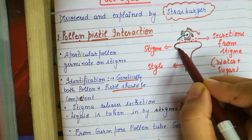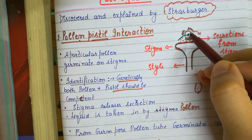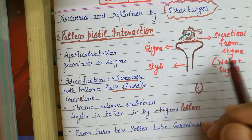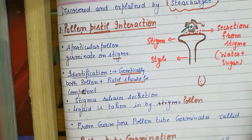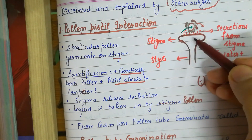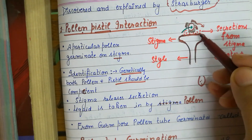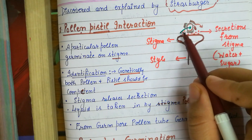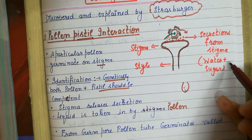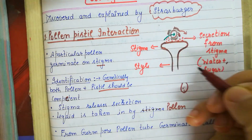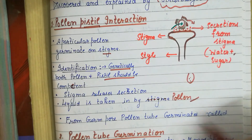As you can see, I have drawn a big diagram of stigma and style. Here is our pollen with the intine and exine. A particular species or particular pollen always germinates on its stigma. The first step is identification — genetically, both pollen and pistil should be competent and specifically compatible with each other. After genetic identification, the stigma releases a few secretions, shown here as small red dots, containing water and sugar. This liquid is taken in by the pollen.